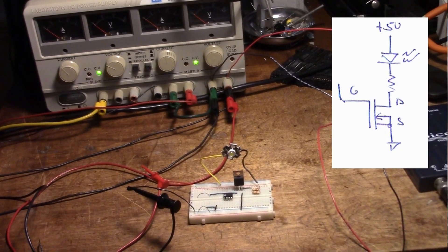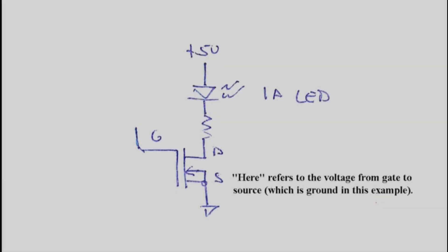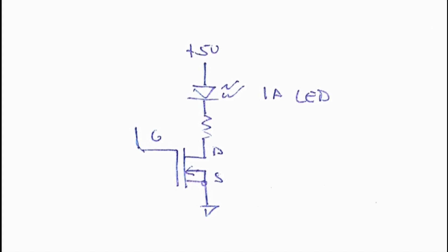How much power does it take to keep this on or off? Zero. No current's flowing. There's a voltage drop across here of about five volts when it's on, zero volts when it's off. But if no current flowing, no power. That's why we like MOSFETs. They make great switches.